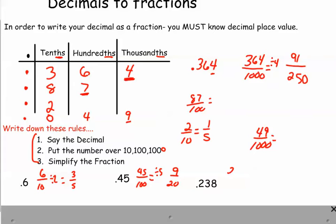This is two hundred and thirty-eight thousandths. So I'm going to divide by two here, and I think I get one-nineteen over five hundred.